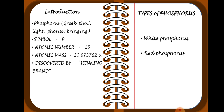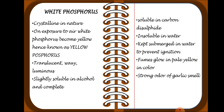There are two types of Phosphorus: White Phosphorus and Red Phosphorus. White Phosphorus is crystalline in nature. On exposure to air, white Phosphorus becomes yellow; hence it is also known as Yellow Phosphorus. It is translucent, waxy, and luminous — slightly soluble in alcohol and completely soluble in carbon disulphide. Insoluble in water, it is kept submerged in water to prevent ignition.